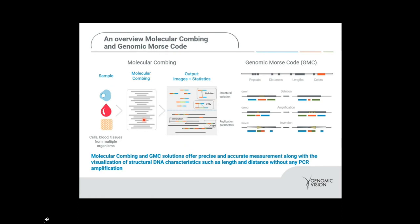We also provide the second critical part of our technology, which is our genomic Morse code. The genomic Morse code encompasses a fluorescent and spatial molecular analysis to identify repeat elements and features such as deletion events, amplification events, and inversion events. The genomic Morse code is a genomic detection strategy used to identify known and undiscovered structural variants.